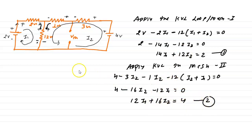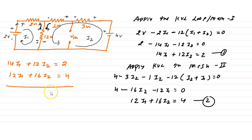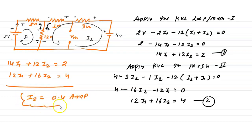By solving these two equations — 14I1 plus 12I2 equals 2, and 12I1 plus 16I2 equals 4 — if we solve for the values of I1 and I2, then the value of current I2 will be 0.4 ampere.